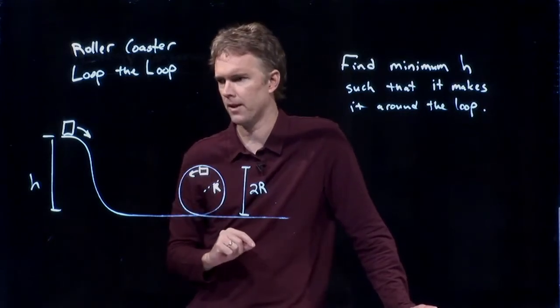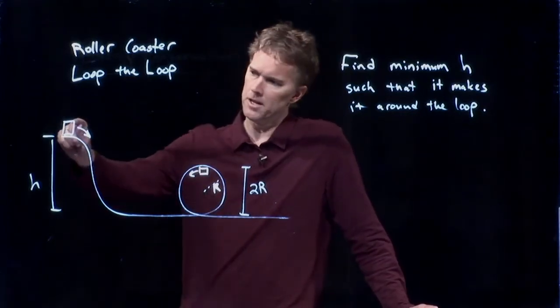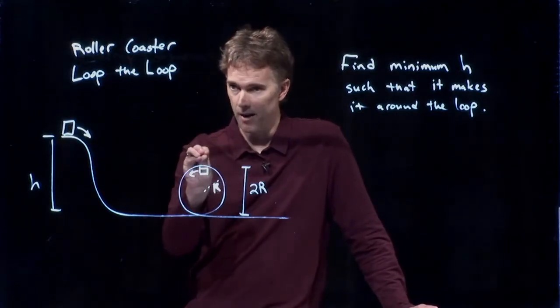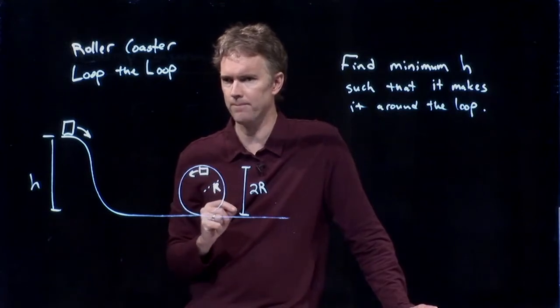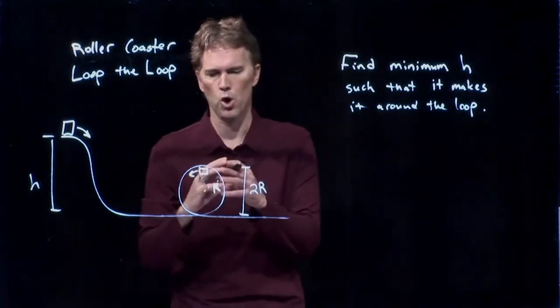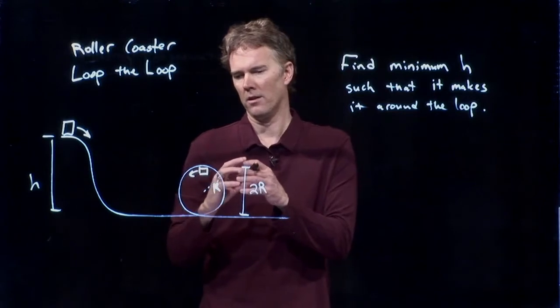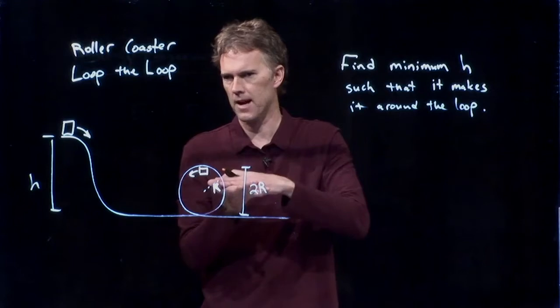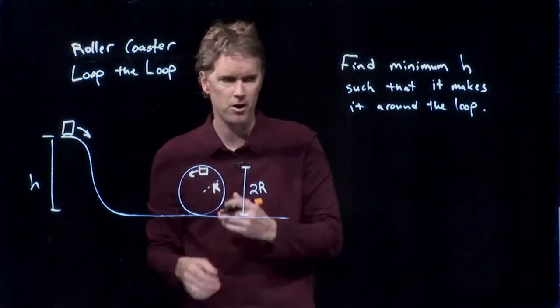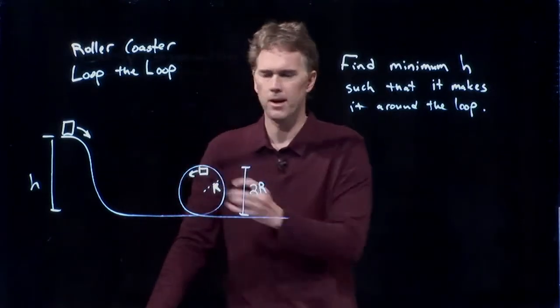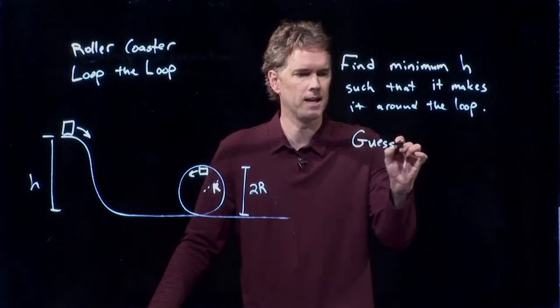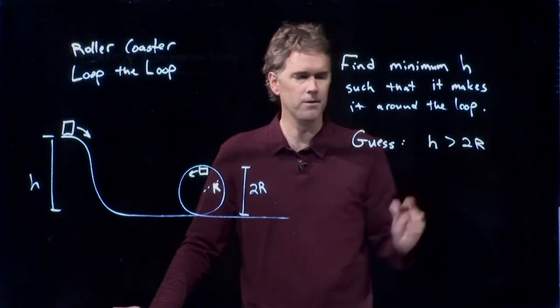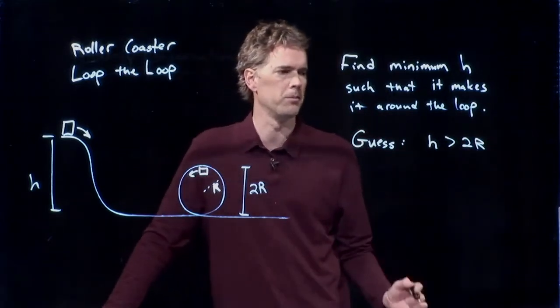And what's going to happen is if I start at height h and I end up back here at height h, I come to a stop, and then I fall. Right. And so that's not going to work. We're pretending the roller coaster is not clung to the track. It doesn't have wheels on the underside of the track, only on the top side. So if it comes to a stop, it's going to fall off. So it's got to be bigger than that. So let's take a guess that h has to be bigger than 2r and see if we can figure out what the minimum is.